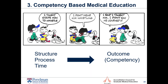A third reason for direct observation is our move to a competency-based model. We're trying to move away from over-reliance on structure, process, and dwell time to look at outcome measures through competencies. As the saying goes, 'I taught Stripe how to whistle — I didn't say he learned it.' We need to be clear on what our learners can actually do, and milestones are designed as a narrative way to think about those developmental outcomes.